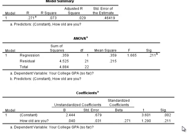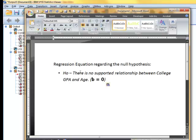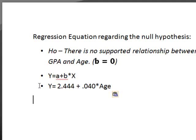Now let's construct the regression equation — that is our most important thing. We're going to write: the regression equation, regarding the null hypothesis of there being no supported relationship between college GPA and age (or B equals 0), is: Y equals A plus B times X, where A is the intercept and B is the slope. In our case, the regression equation is: Y equals 2.444 plus 0.040 times age.